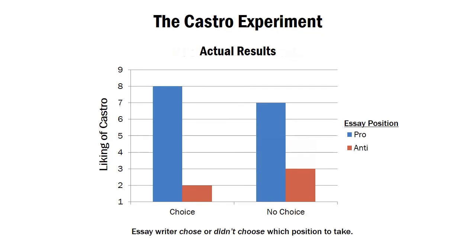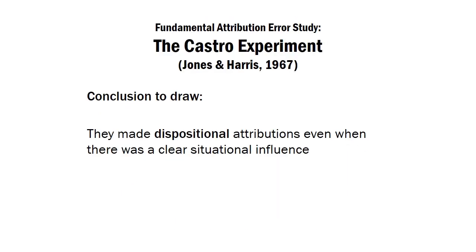But here's what they actually found: under conditions of choice, people draw dispositional attributions as expected. However, when people knew the author had no choice over which position to take, they still used the behavior reflected in the essay to judge an internal characteristic of the author. They used the essay position to judge the author's actual opinion rather than ignoring that information — which is what they should have done if they drew a situational attribution. People make dispositional attributions even when there's a clear situational influence.